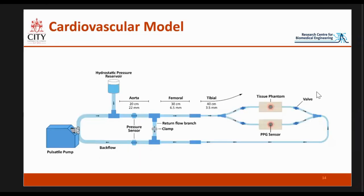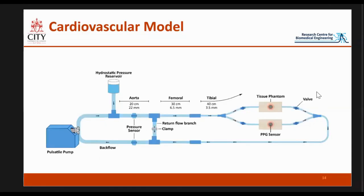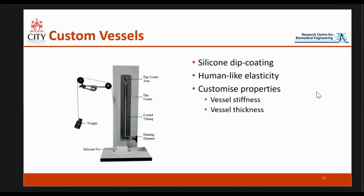Here are the phantoms. For the network we tend to use commercial tubing, whereas for our phantoms — where we specifically analyze the PPGs and control the properties — we make our own vessels, where we can customize properties such as thickness and also create more human-like vessels than what you can buy.